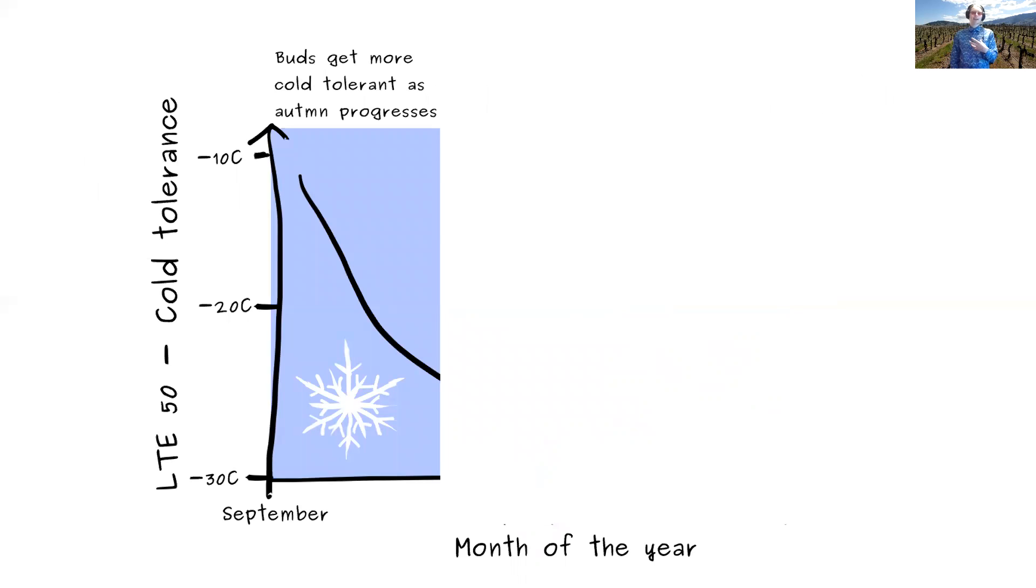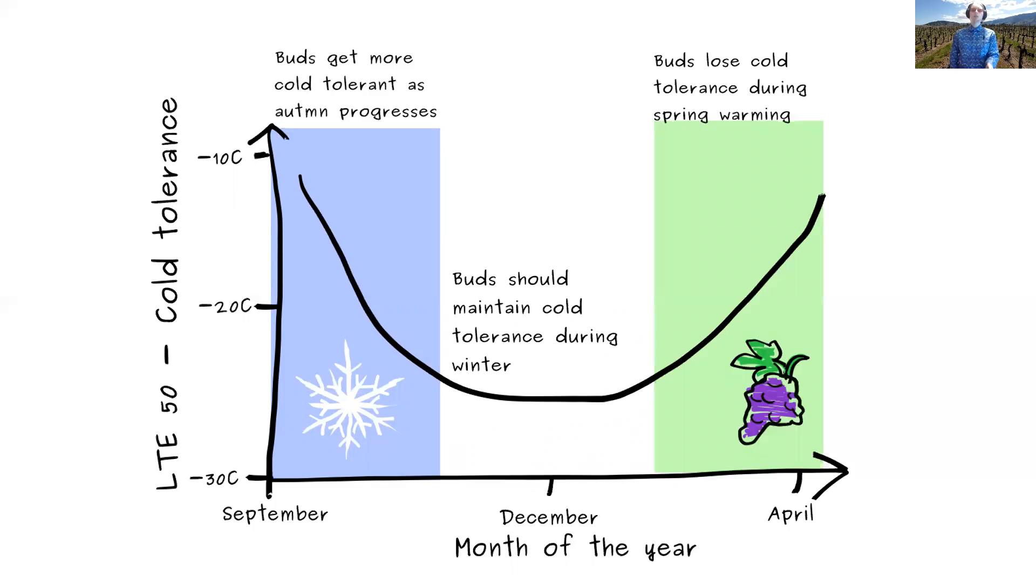And wine grapes don't stay the same amount of tolerance to cold throughout the year. Instead they gain cold tolerance as the autumn progresses as they go into dormancy, and then during the half of the winter they maintain this maximum level of cold tolerance. Before the spring when they start losing cold tolerance as they start preparing for the growing season and bursting buds. And if the air temperature drops below the maximum cold tolerance of a vine at any point, this is where you start seeing bud die off and potentially the whole plant die off.